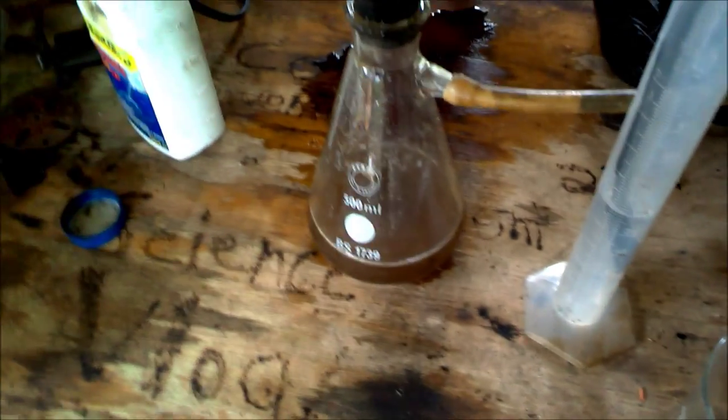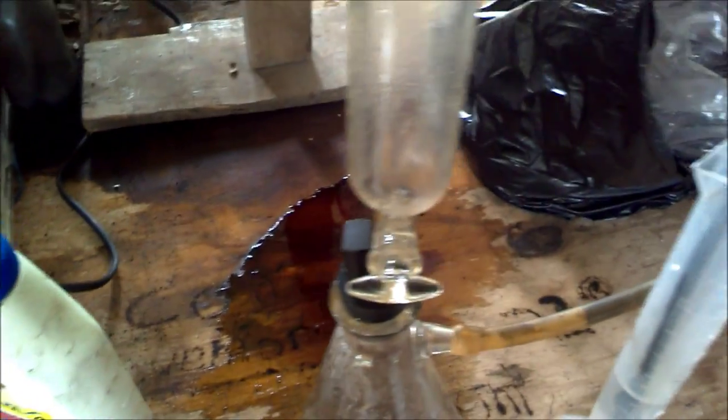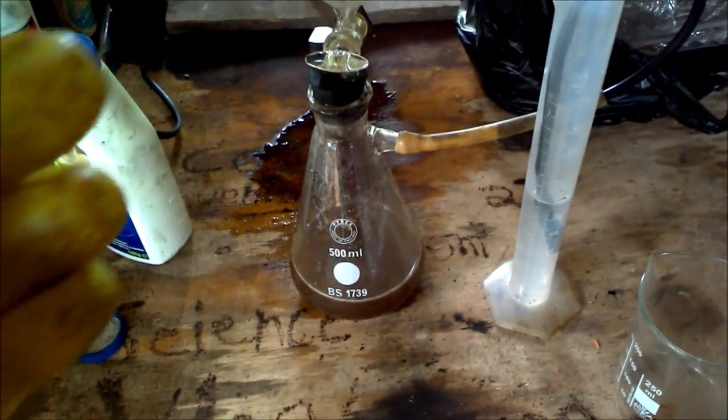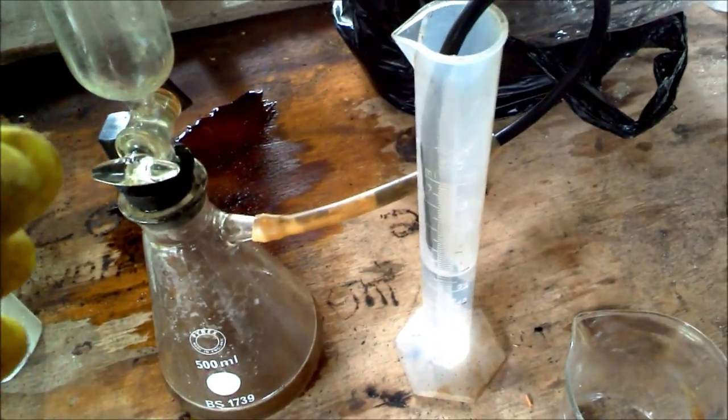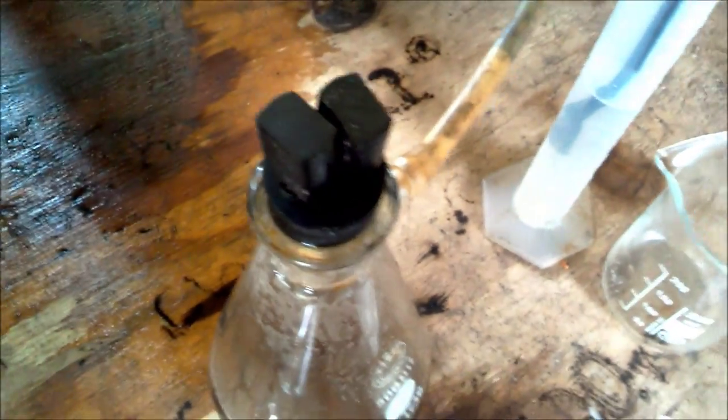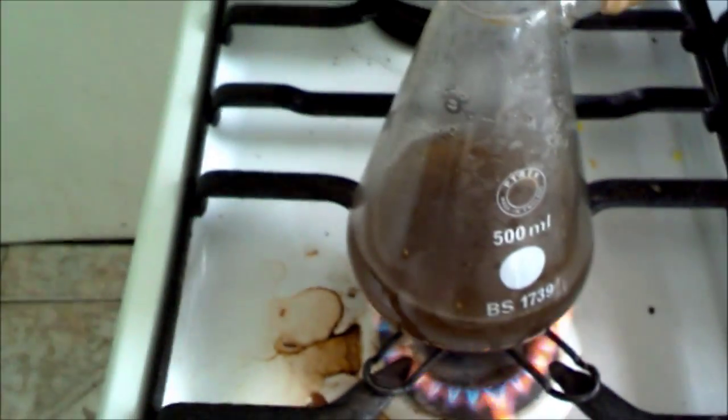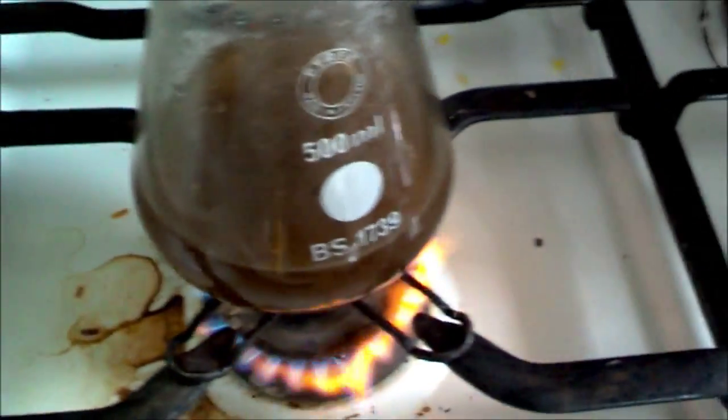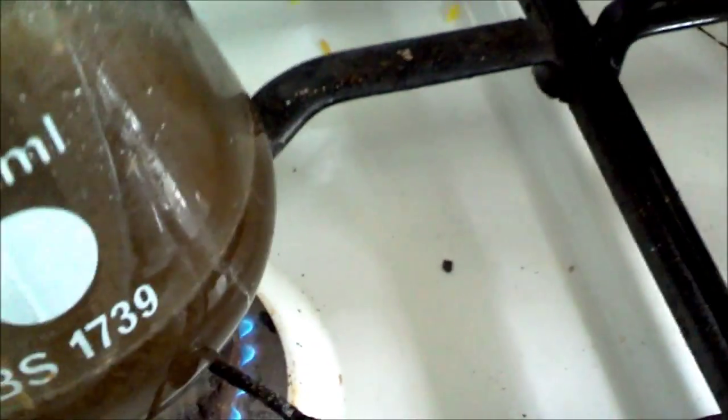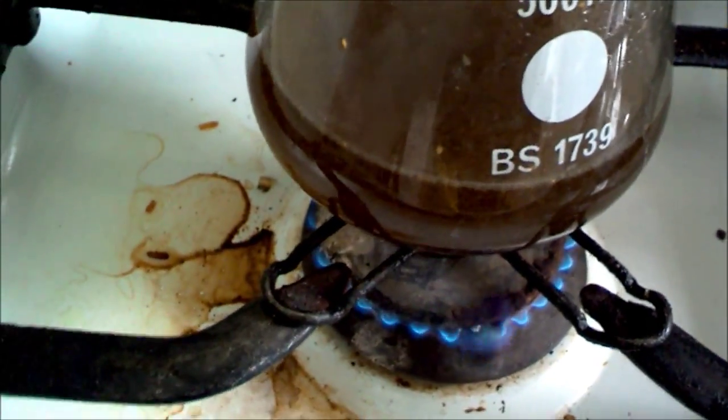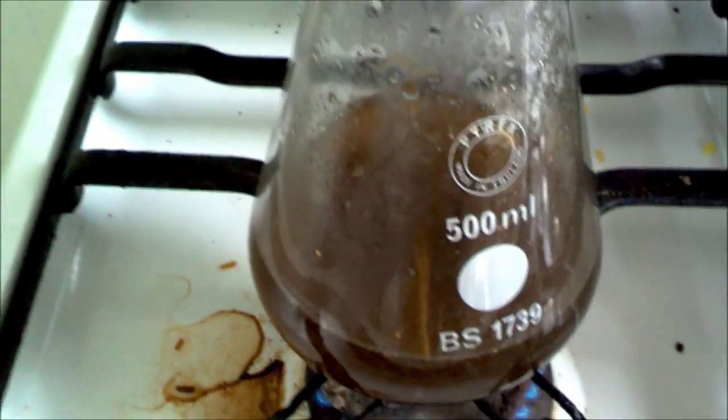Once the addition is done, remove the flask and replace it with a stopper, and then you'll have something like this. Next you'll need to heat the solution. As you can see, the ammonia started generating again. Continue the heating until the bubbles subside.